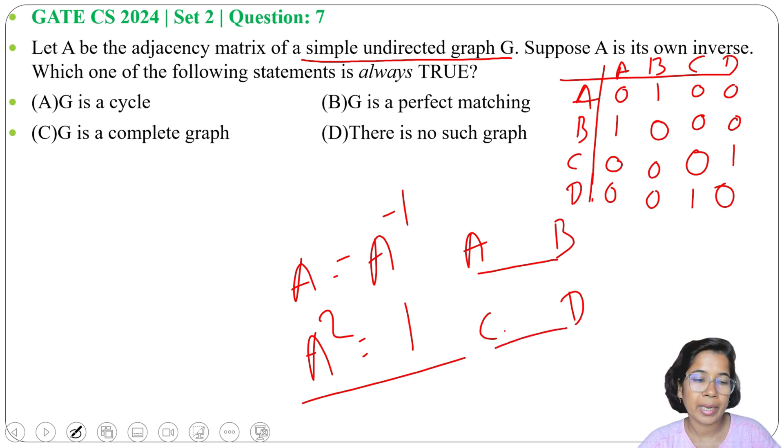And it's a perfect matching. We cannot add any more edges. What is matching? Matching means it's a subset of the graph in such a way that no two edges are incident on a single vertex. Now check the options.